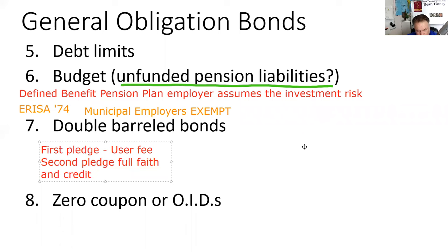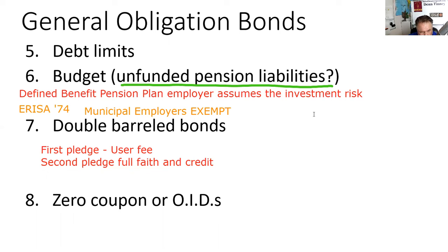For example, as municipal financial advisor for Salt Lake City wanting to host the Olympics: if you only pledge revenues from the Olympics, that's a tough sell — some host cities have been financial successes, others disasters. I'd recommend making it a double-barrel bond. Your confirmation would say 'Salt Lake City Olympic Organizing Committee Revenue Bonds, a general obligation of the city of Salt Lake.' If asked to classify this as to type on your exam, you would say it's a GO bond.